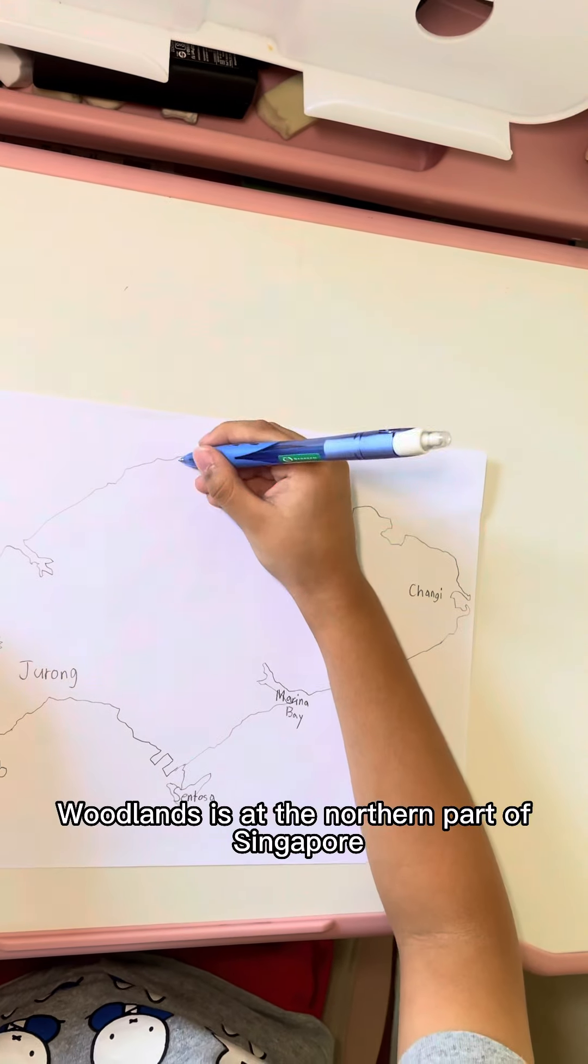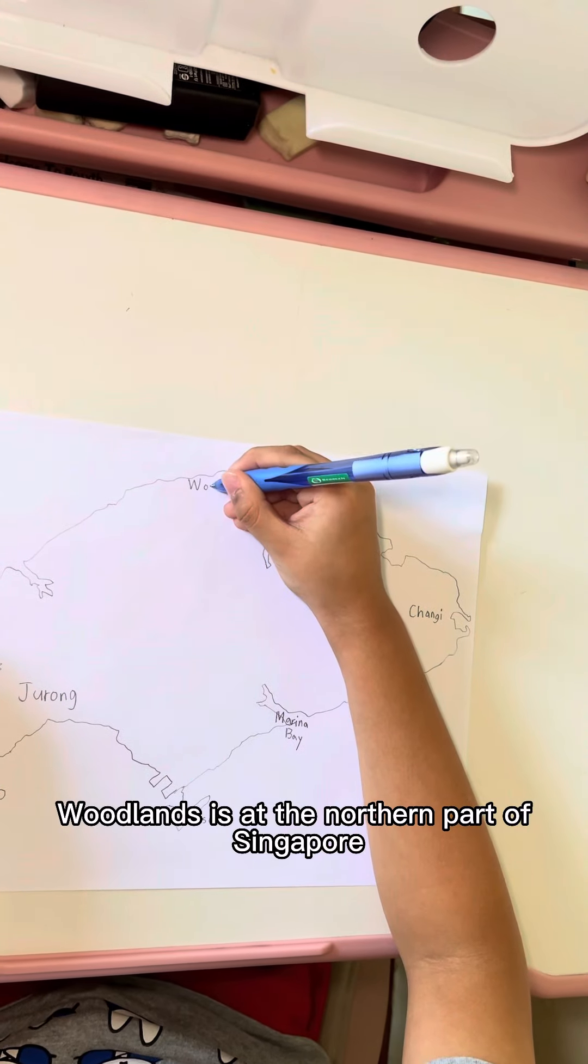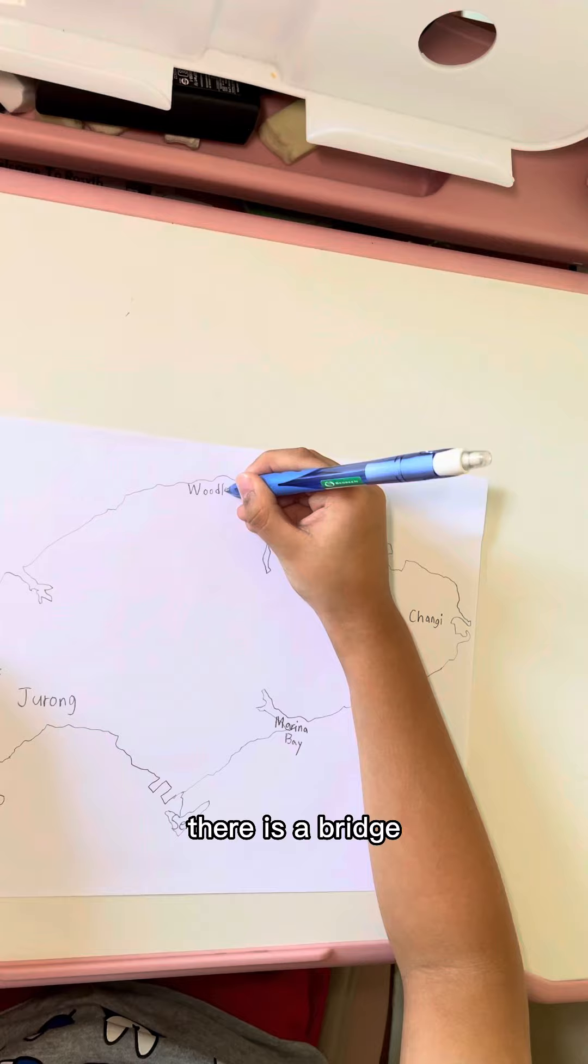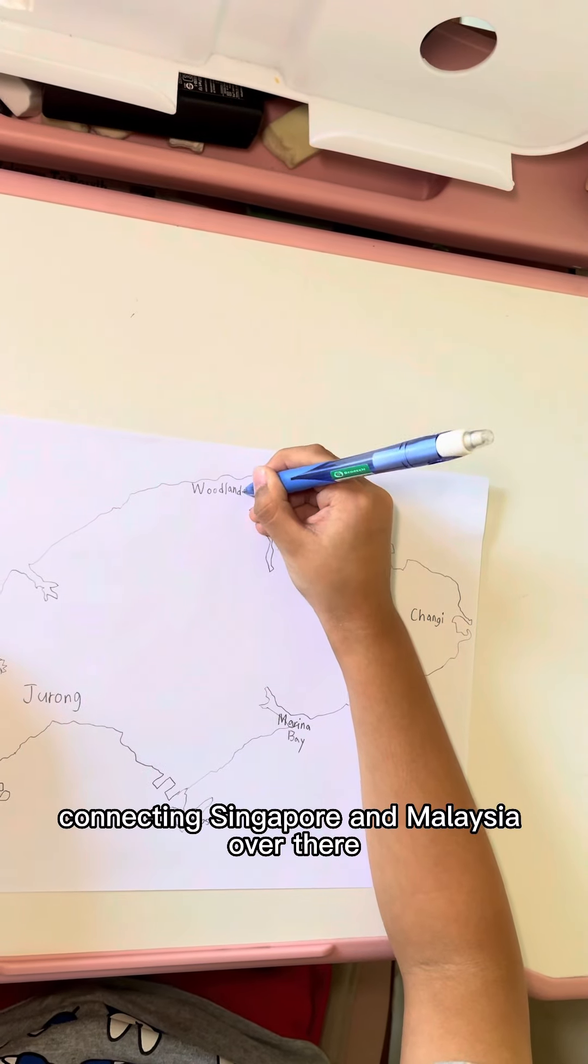Woodlands is at the northern part of Singapore. There is a bridge connecting Singapore and Malaysia over there.